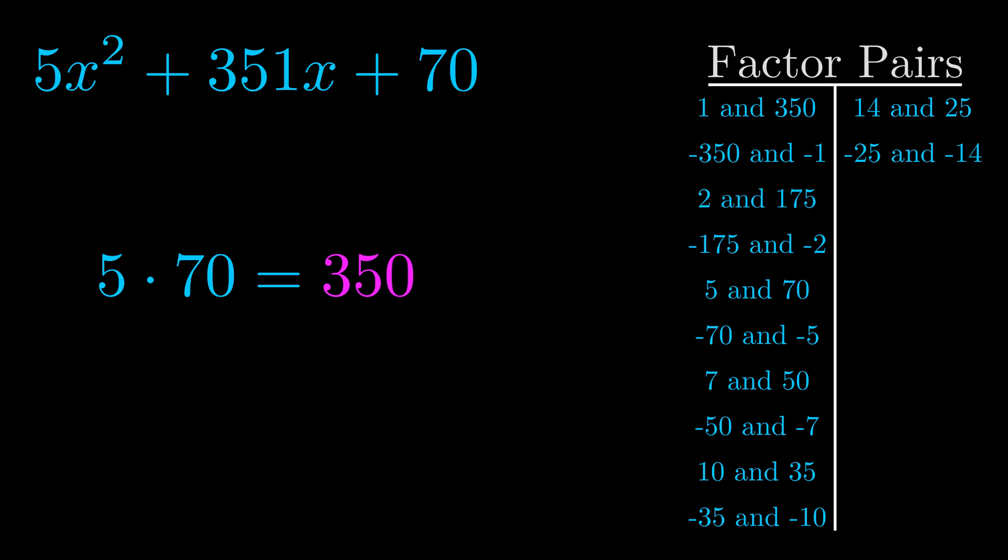The b value is the coefficient on the x term. That's the middle term, the one that we haven't done anything with yet. And really this is the only factor pair that we need.